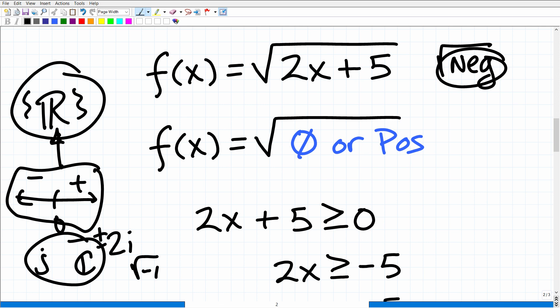So what's okay is as long as 2x plus 5, okay, is greater than or equal to 0, you will be okay.